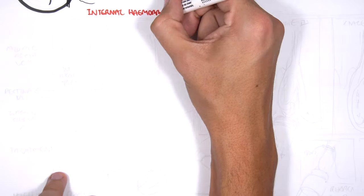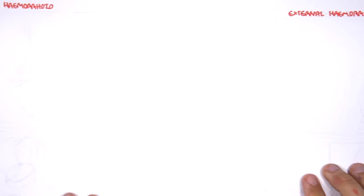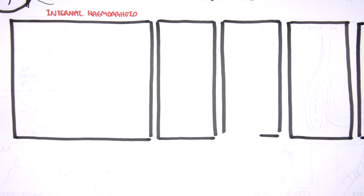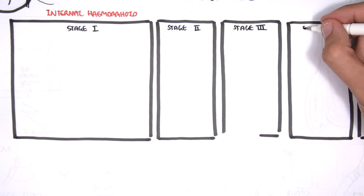Hemorrhoids can also be staged. The internal hemorrhoids can be staged from 1 to 4, and it is important to stage because this means treatment will also differ.